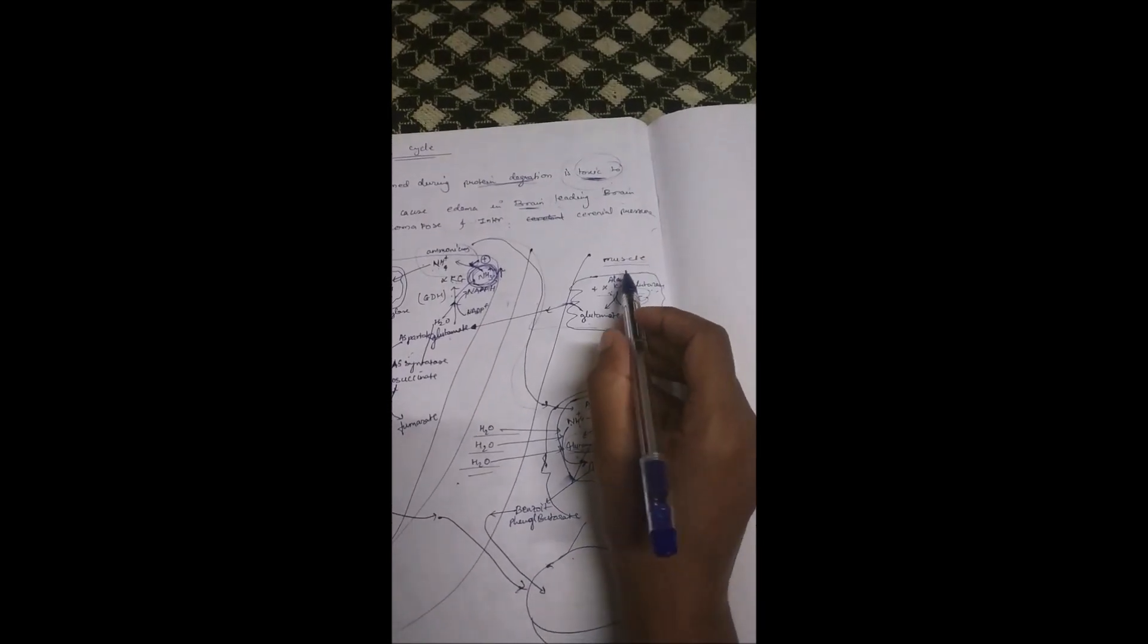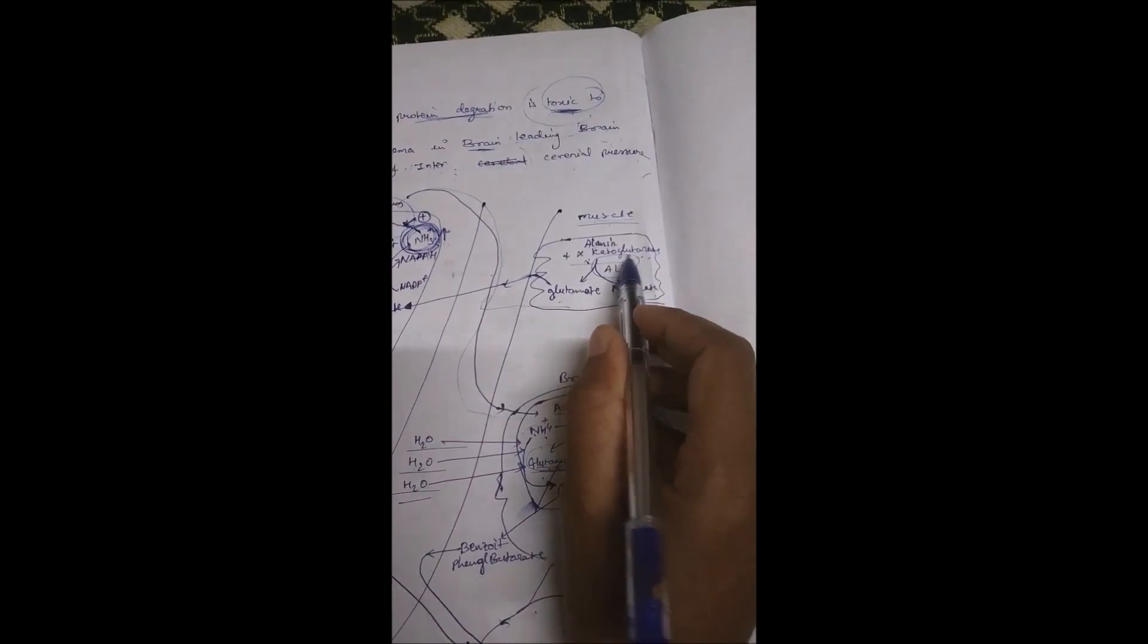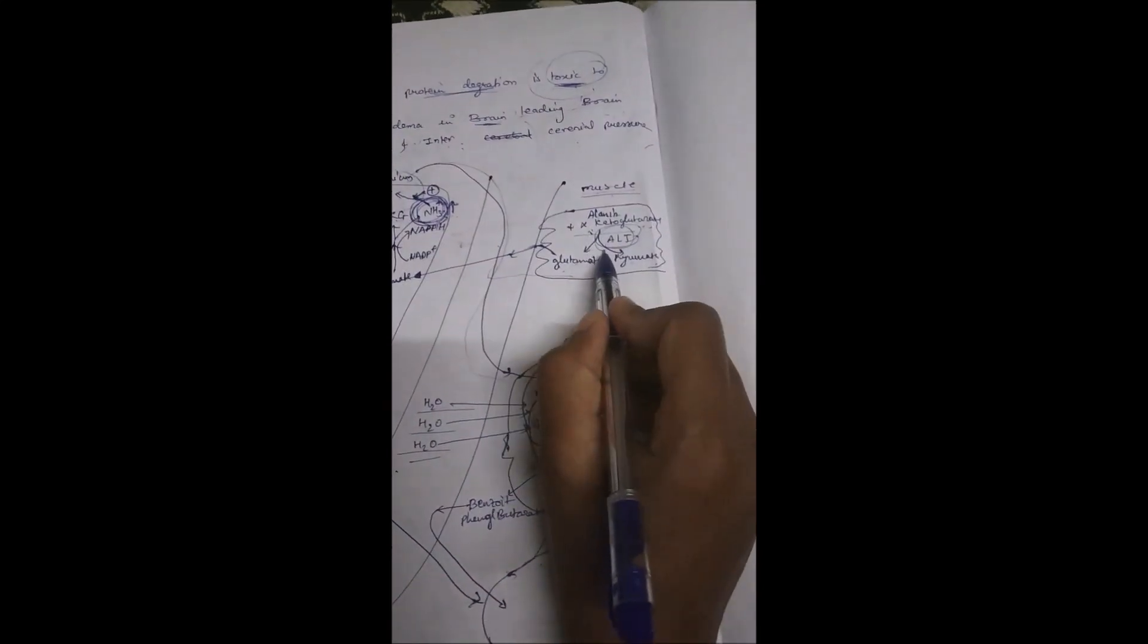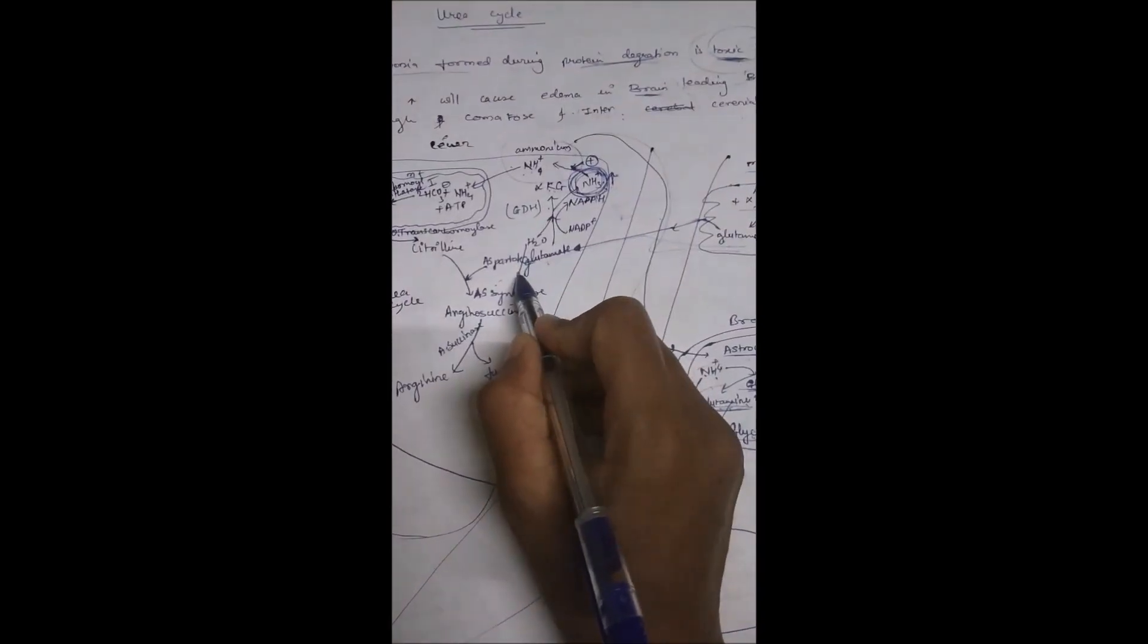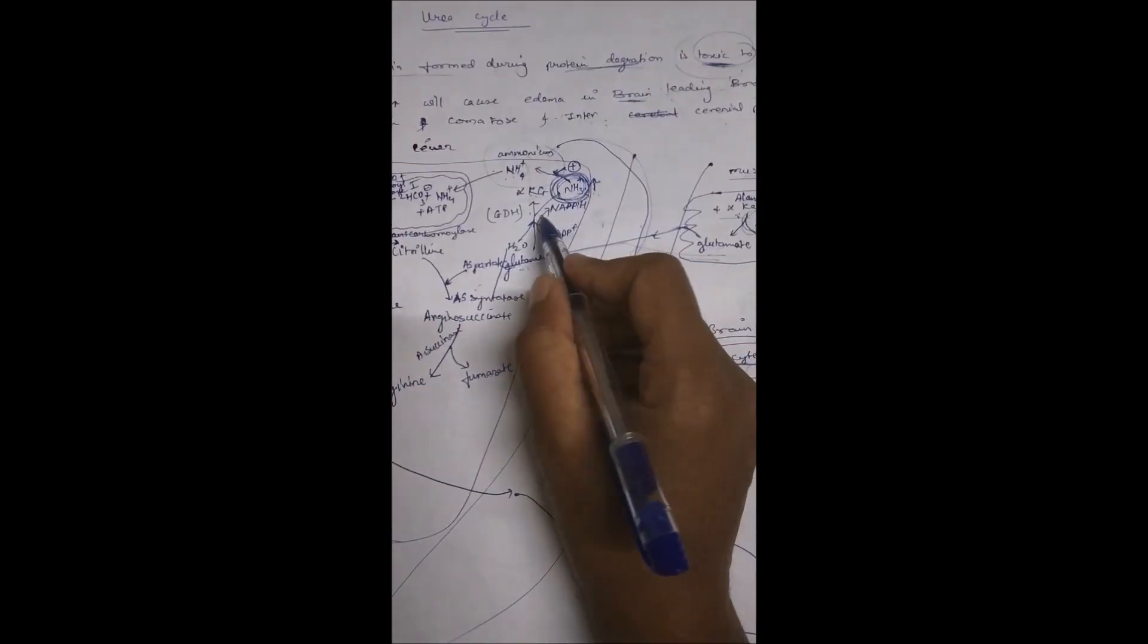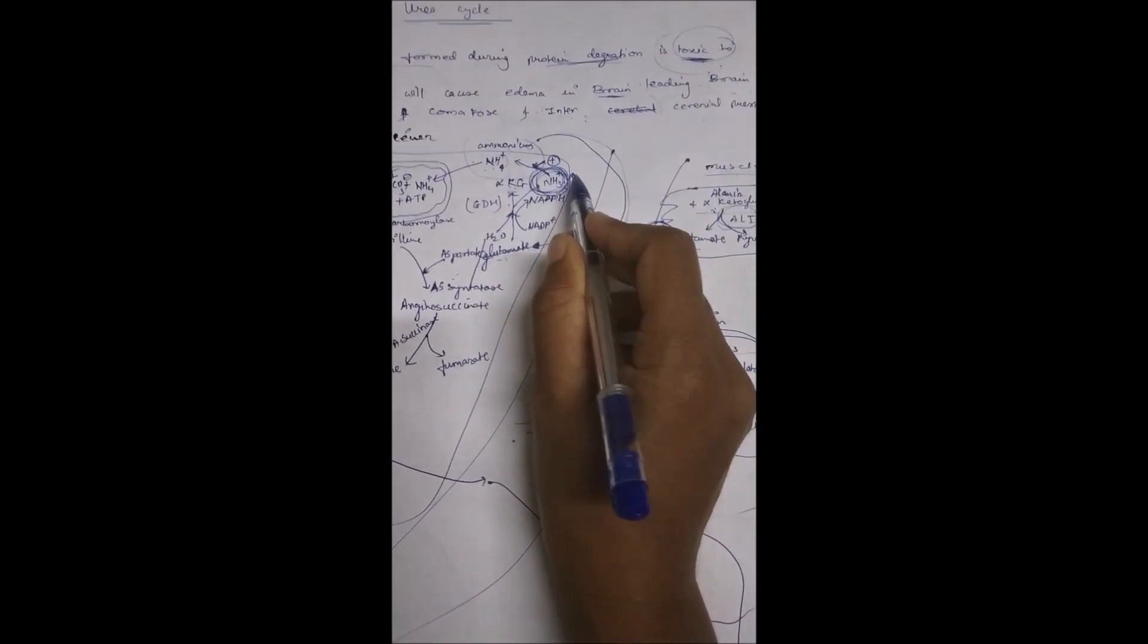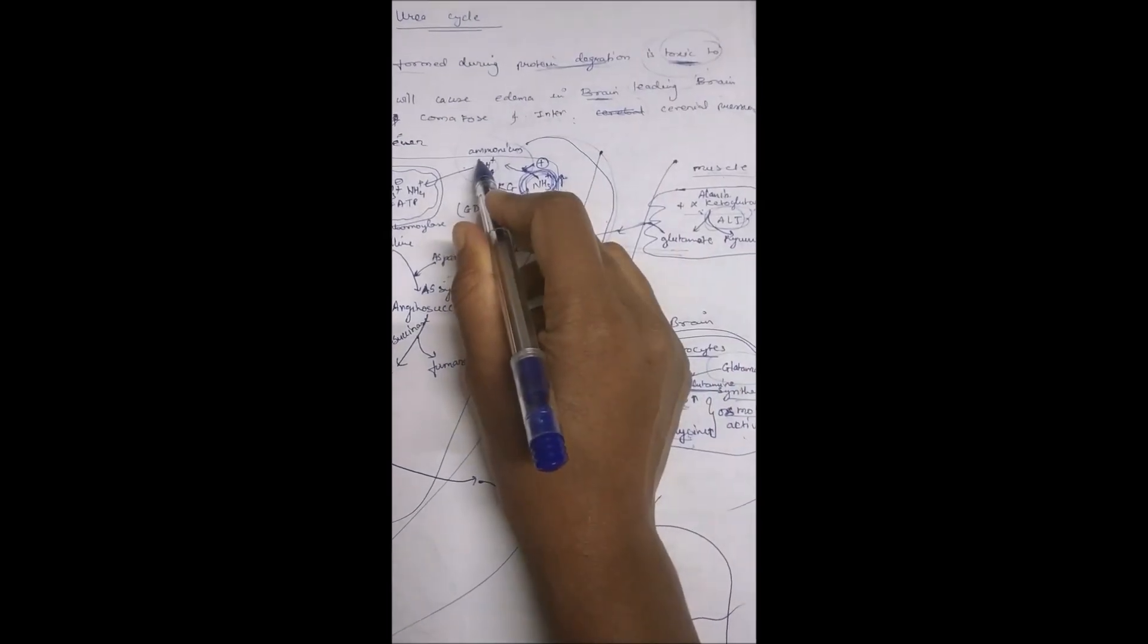Protein degradation takes place in muscles. In muscles, alanine and alpha-ketoglutarate get converted into glutamate and pyruvate using ALT enzyme. This glutamate passes through blood vessels into the liver. In the liver, glutamate gets converted into ammonia and alpha-ketoglutarate.